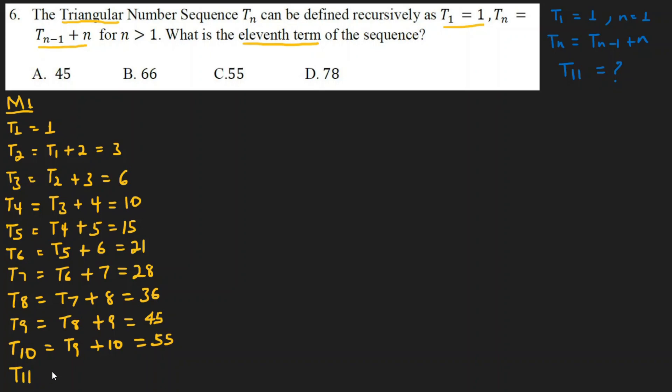T11 is equal to T10 plus 11, so 55 plus 11 equals 66.